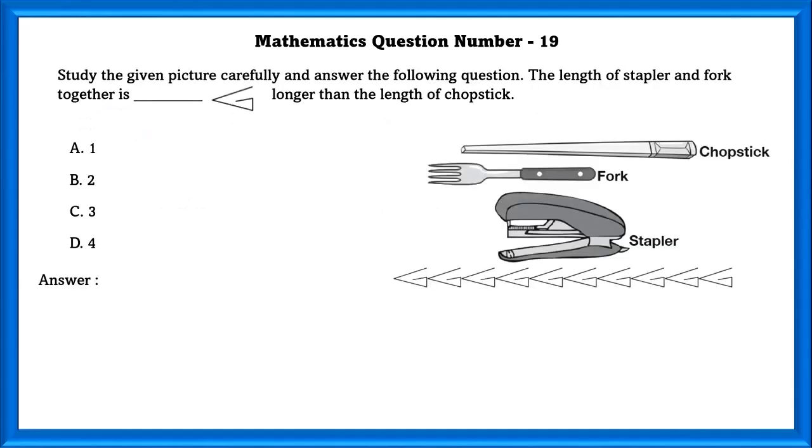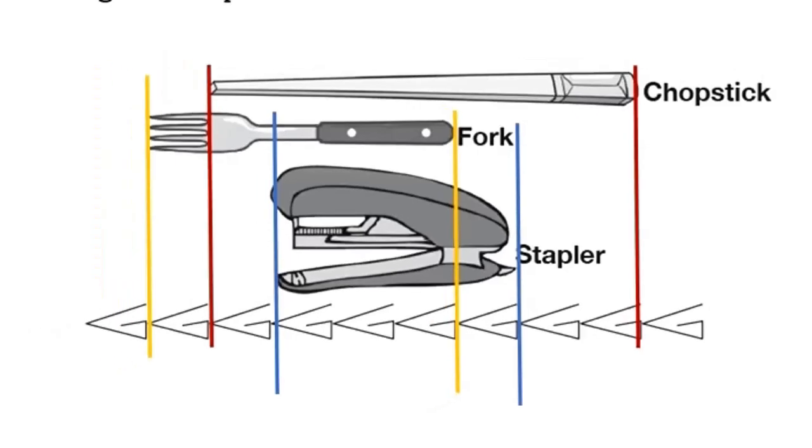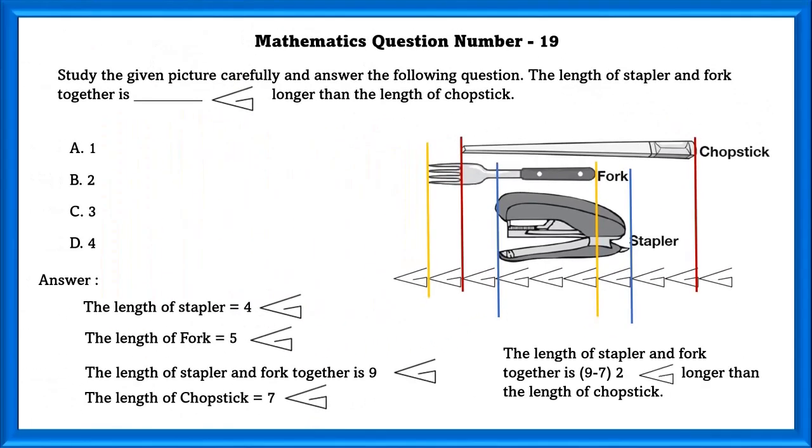Mathematics question number 19. Study the given picture carefully and answer the following question. The length of the stapler and fork together is dash symbol longer than the length of the chopsticks. First, we will find out the length of each thing. The length of the stapler is 4 symbols. The length of the fork is 5 symbols. And the stapler and fork together is 9 symbols. And the length of the chopsticks is 7 symbols. The length of the stapler and fork together is 2 symbols longer than the length of the chopsticks.